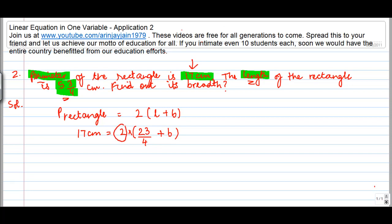Now, if I have to remove this two from both the sides, what I do is I multiply both the sides by 1 by 2. So, this 2 gets knocked off here and I get 17 by 2 is equal to 23 divided by 4 plus the breadth.